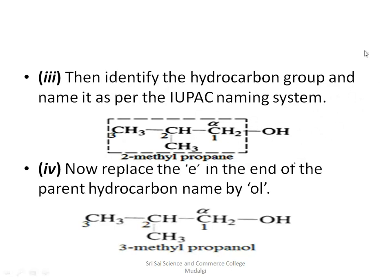The substituent group here is a methyl group, attached to the second carbon atom, so the prefix is '2-methyl'. The root word is 'prop' since there are three carbon atoms. Since it is a single bond, the primary suffix is 'ane' giving propane. Then replace the 'e' at the end of the parent hydrocarbon name with 'ol', because the suffix for the functional group alcohol is 'ol'. Hence the name of this compound becomes 2-methylpropan-1-ol.